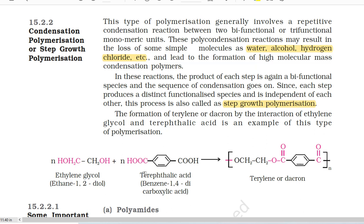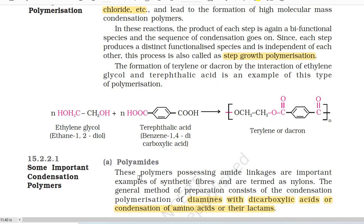15.2.2 Condensation Polymerization or Step Growth Polymerization. This type of polymerization generally involves a repetitive condensation reaction between two bifunctional or trifunctional monomeric units. These polycondensation reactions may result in the loss of some simple molecules such as water, alcohol, hydrogen chloride, etc., and lead to the formation of high molecular mass condensation polymers. In these reactions, the product of each step is again a bifunctional species and the sequence of condensation goes on. Since each step produces a distinct functionalized species and is independent of each other, this process is also called step growth polymerization.